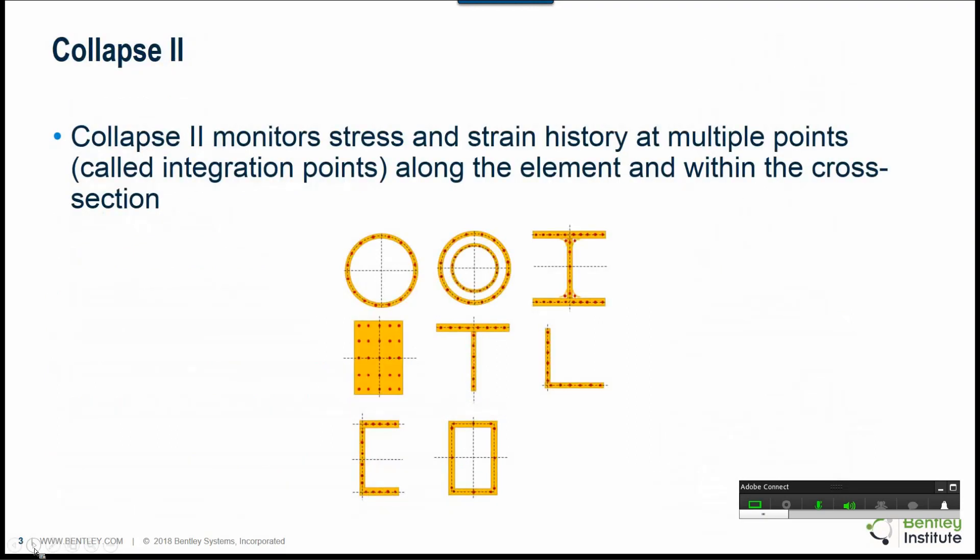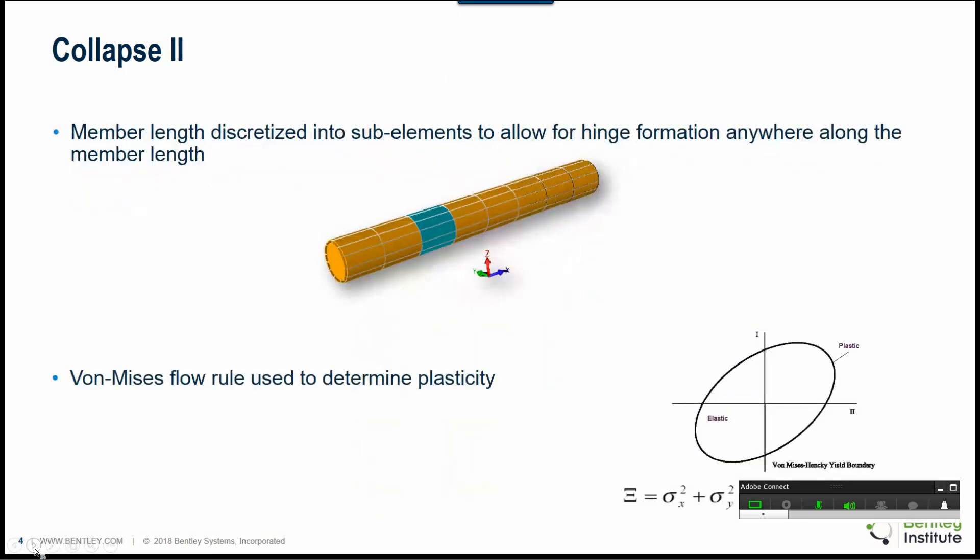The new CLAPS program allows for the gradual development of a plastic hinge through the cross section of a member by monitoring the stress strain history at integration points throughout the cross section as shown here. Similarly, the member length is automatically discretized into sub elements to allow for hinge formation anywhere along the member length. The Von Mises flow rule is used to determine plasticity.